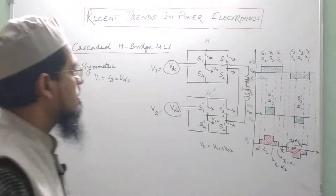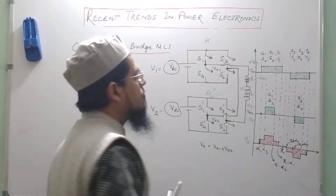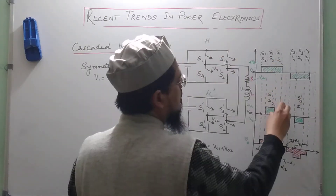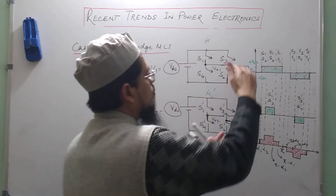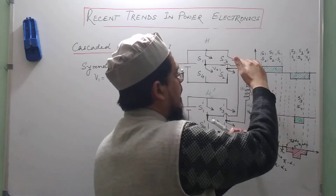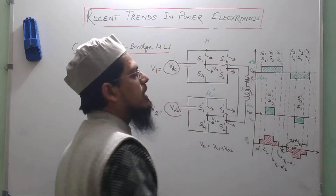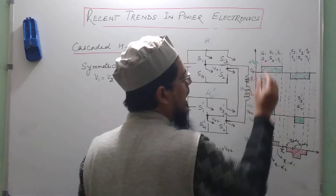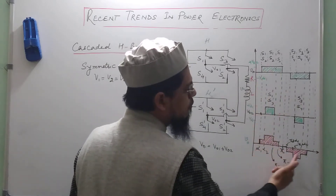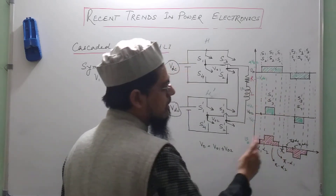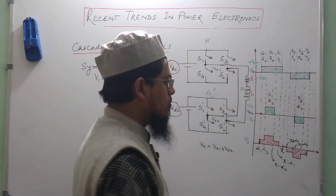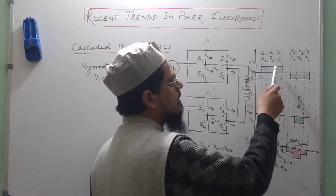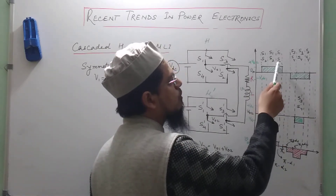If we generate one type of waveform for the first bridge and another type for the second bridge, the voltage waveform appearing at the load will be the sum of these two. If you add these two waveforms you get a waveform with multiple steps, unlike the two-level waveform which has only two steps.